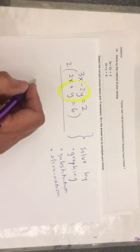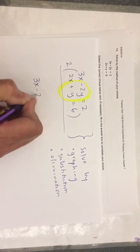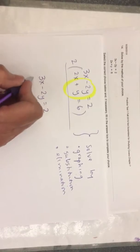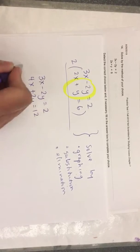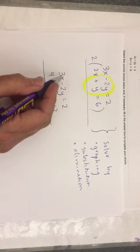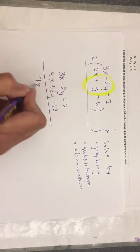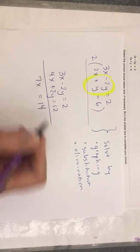So this would give me 3x minus 2y equals 2, 4x plus 2y equals 12. 3x plus 4x is 7x. 7x equals 14.